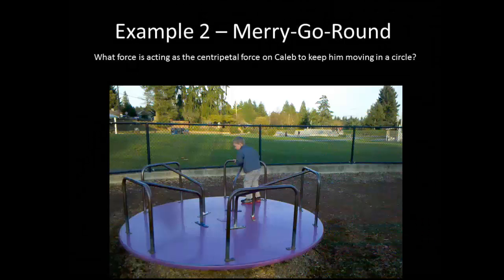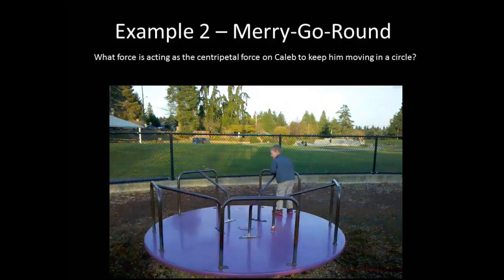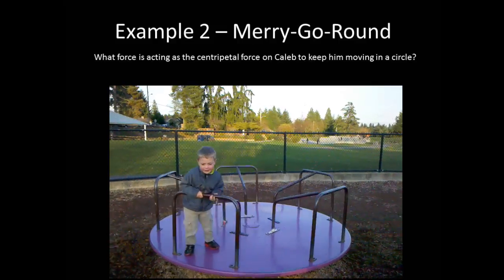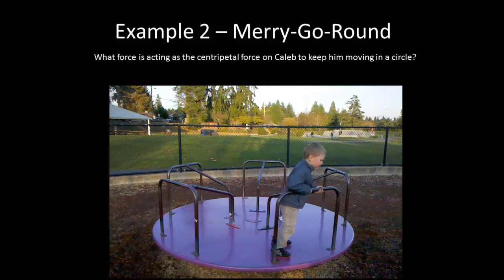For our second example, let's consider Caleb on a merry-go-round. What force is acting as a centripetal force on Caleb to keep him moving in a circle? Well, he's touching this bar, so the bar must be supplying an inward force to have him move in a circle. If he was not touching the bar, however, it would end up being a static frictional force between his feet and the base of the merry-go-round.